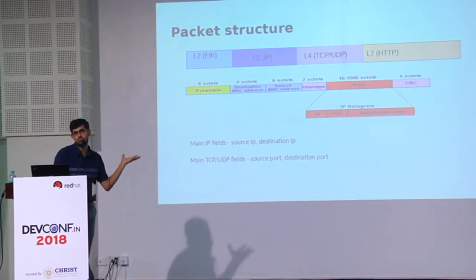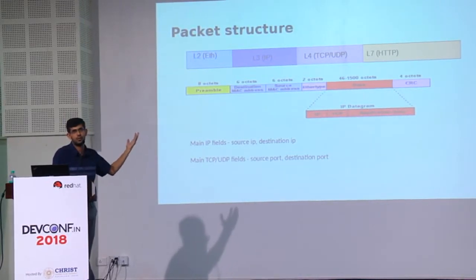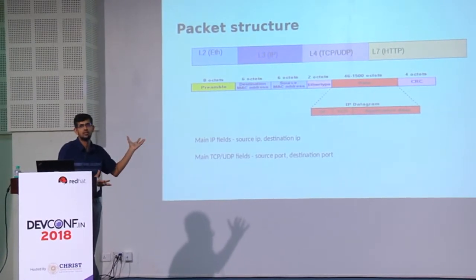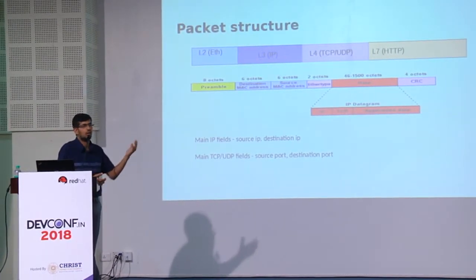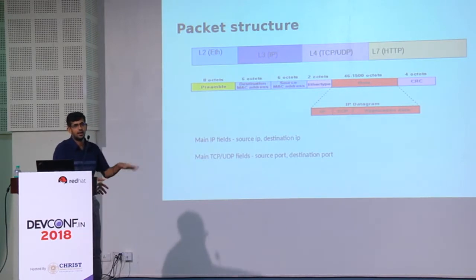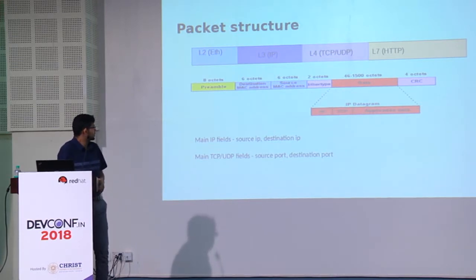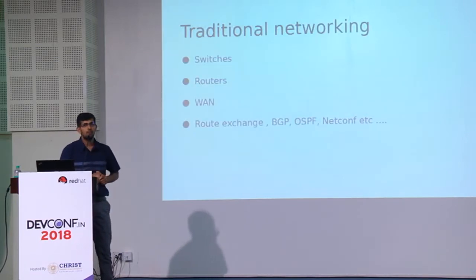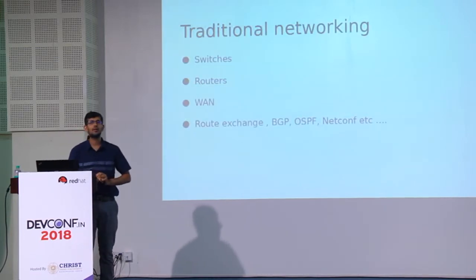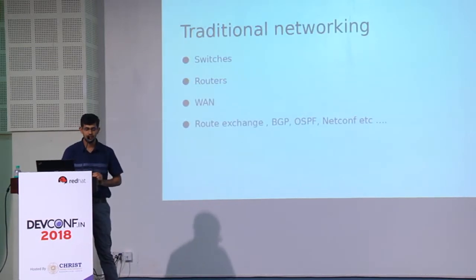Layer 7 will be your actual application payload — what you want to send and how the server would respond. Layer 7 is what is interesting to all the applications, and all the other layers are handled by the underlying networking stack of your operating system. So now let's talk about how traditional networking happens.